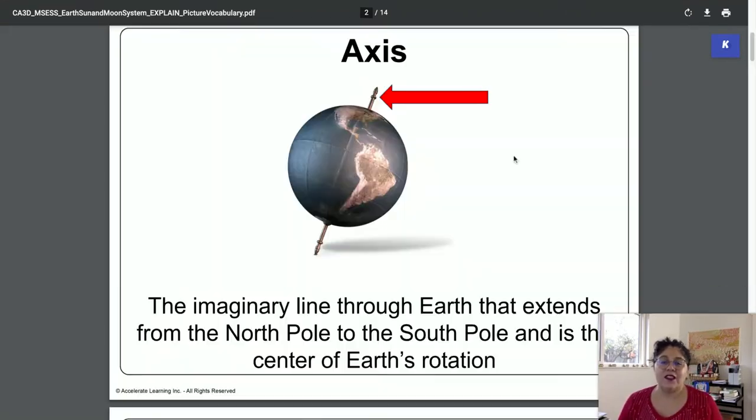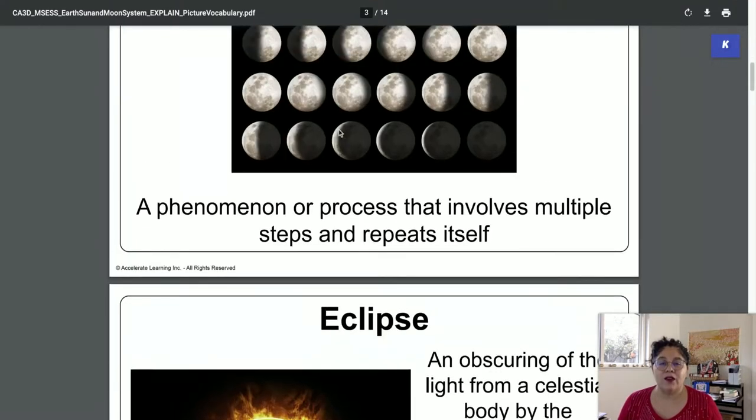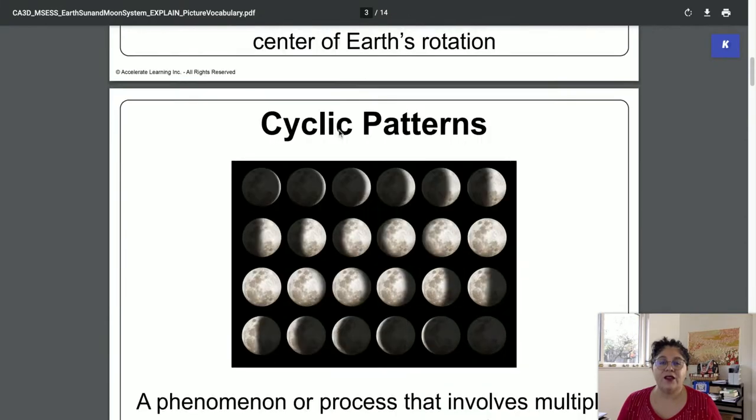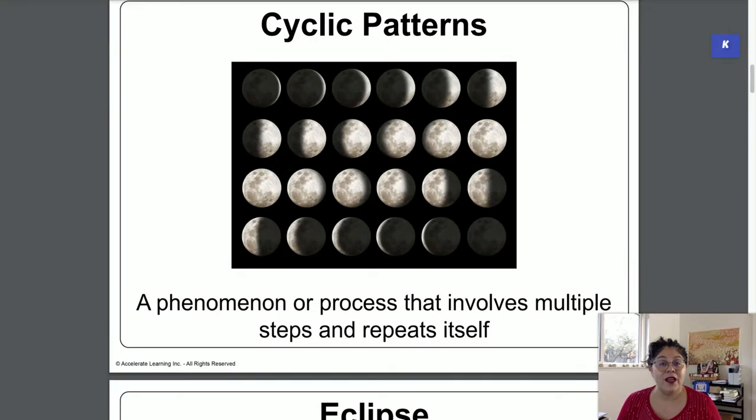Alright, next word: cyclic patterns. Now cyclic patterns are things that repeat themselves, things that go around and around. We have fall, and then we have winter, and then we have spring, and we have summer. It's a cyclic pattern. It goes in a circle.